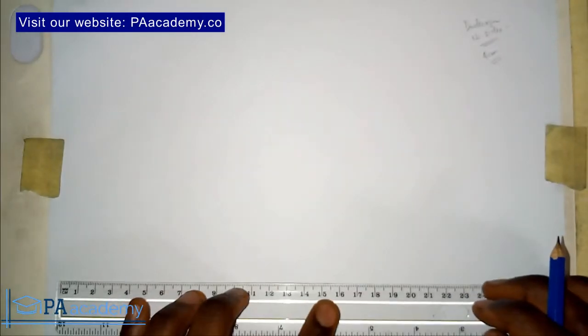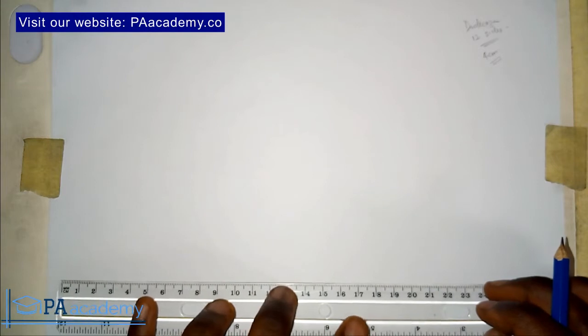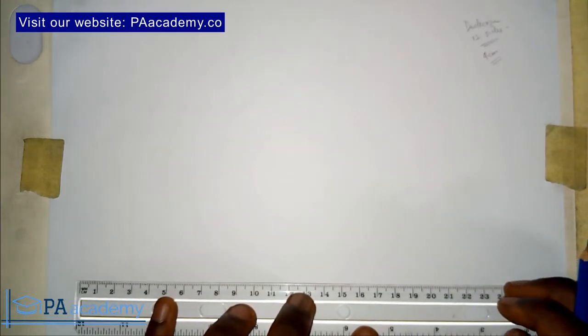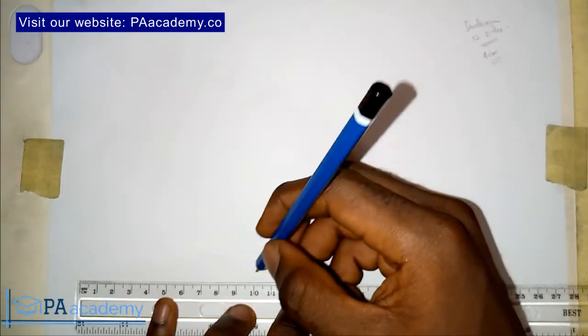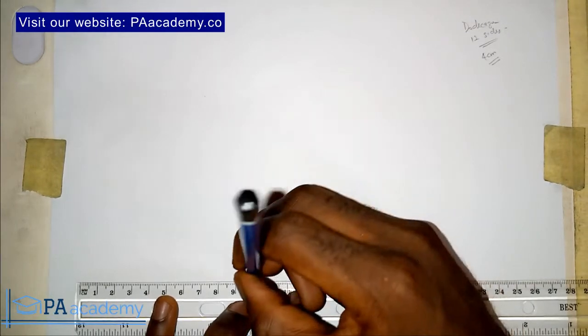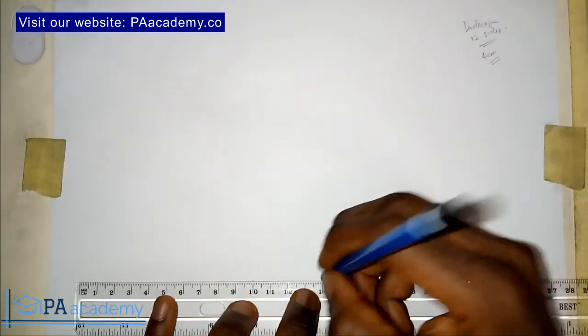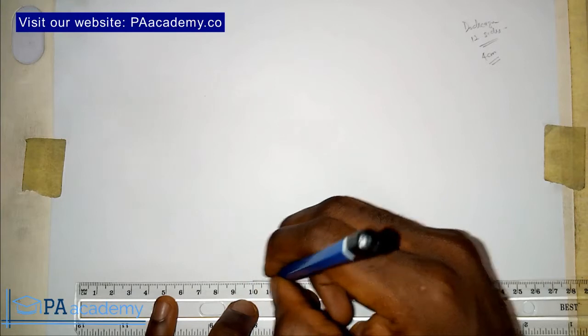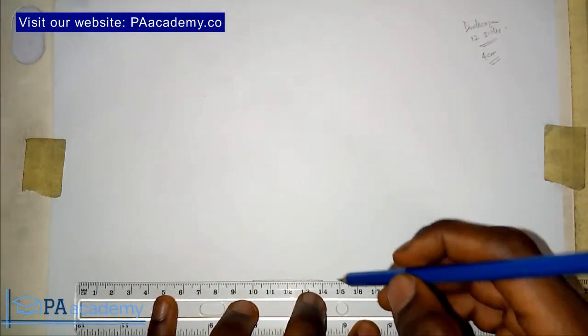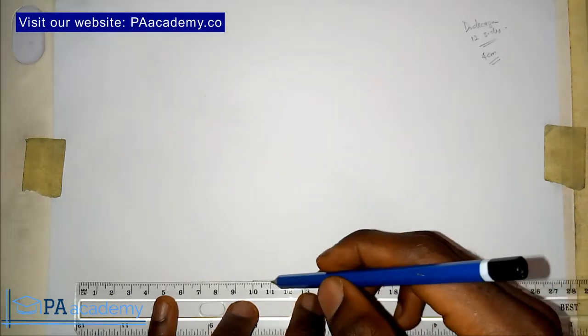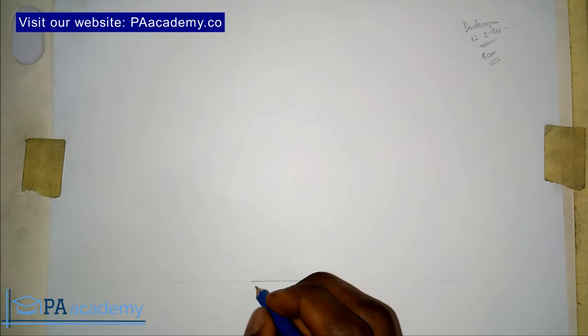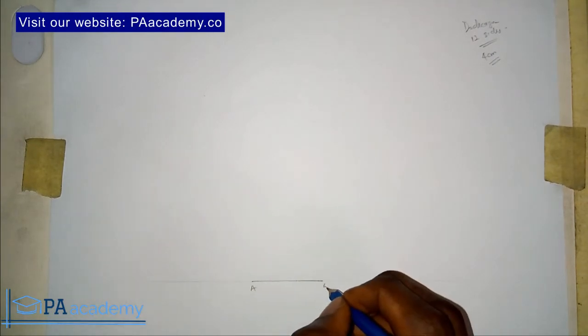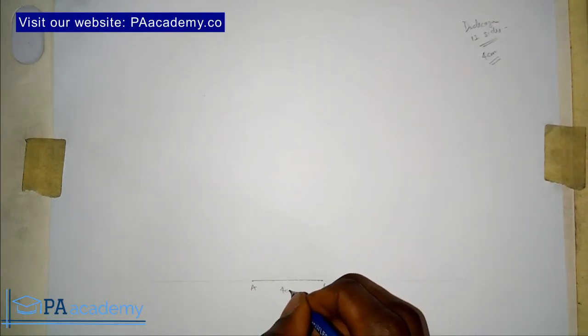To start with, I'm going to be drawing one side of the dodecagon. I'm using four centimetres, so let me draw that four centimetres. I'll also extend it to the right and to the left with a faint line. This is going to be point A and point B, and I'll indicate that this is four centimetres.